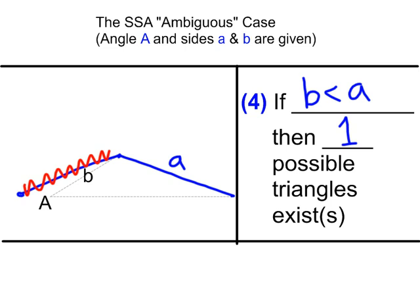Don't become tied to the variables A, a, and b. On past tests students have used b · sin(A) when the problem gave angle C, side c, and side a — in that case the formula must change. So remember the logic, not just the formula. For our example I'll intentionally use variables other than A, a, and b.